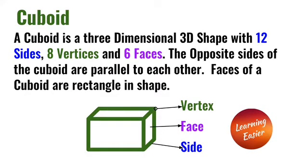A cuboid is a three-dimensional shape with 12 sides, 8 vertices, and 6 faces. The opposite sides of a cuboid are parallel to each other. Faces of a cuboid are rectangles in shape.